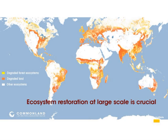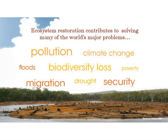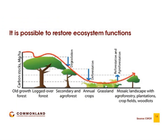Ecosystem restoration contributes not only to restoring land, but also to related problems we see around us: general pollution, climate change, floodings, droughts, biodiversity loss, poverty, migration trends, and security—all connected to land becoming worse. But the good news is there are ample opportunities to restore ecosystems. Activities like agroforestry, new plantations, crop fields, and organic farming do help restore ecosystems.